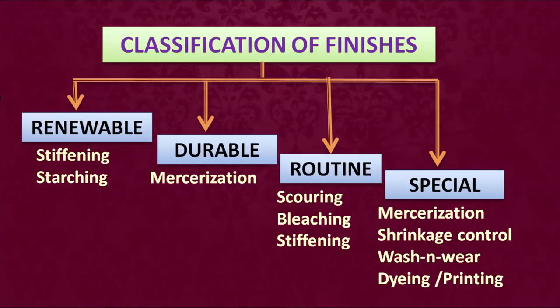Finishes can be of very different kinds and we can classify them into various categories. They can be renewable, they can be durable, they can be routine or special. Here in this chart you can see the different examples of finishes that are applied on fabrics, and we will now be talking about each one of these kinds of fabric finishes in detail.